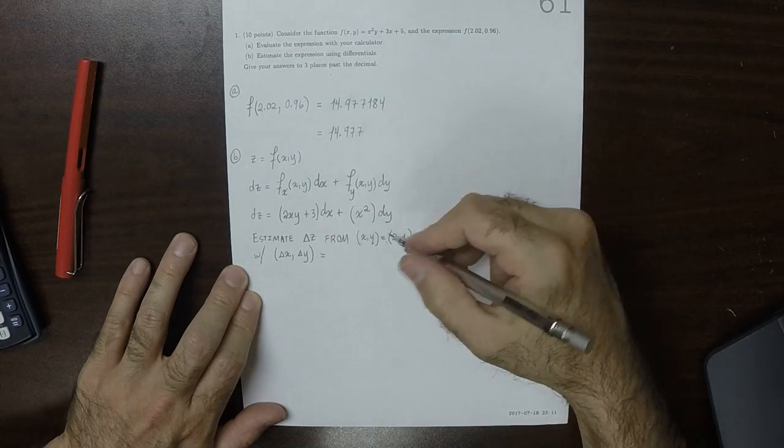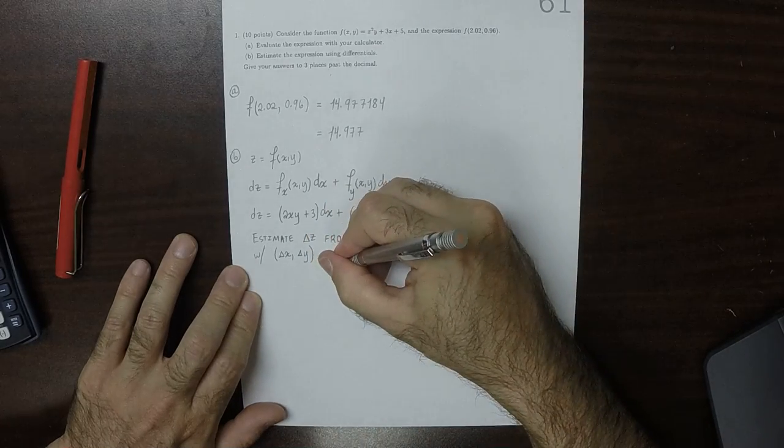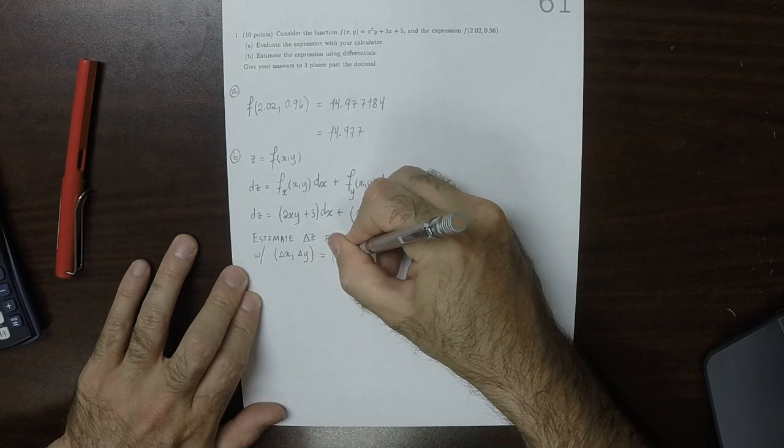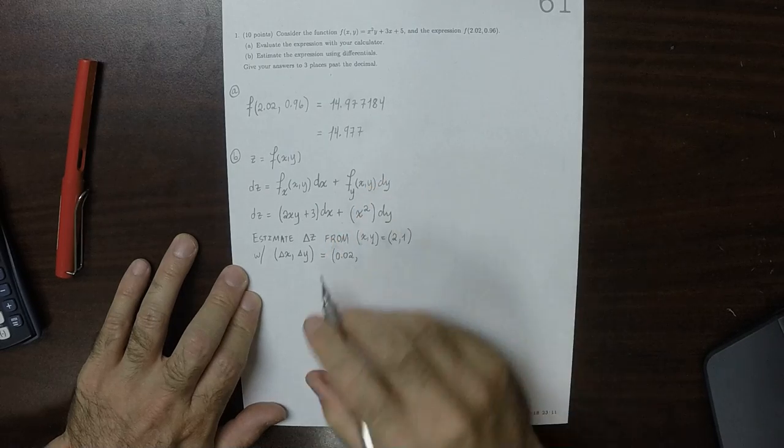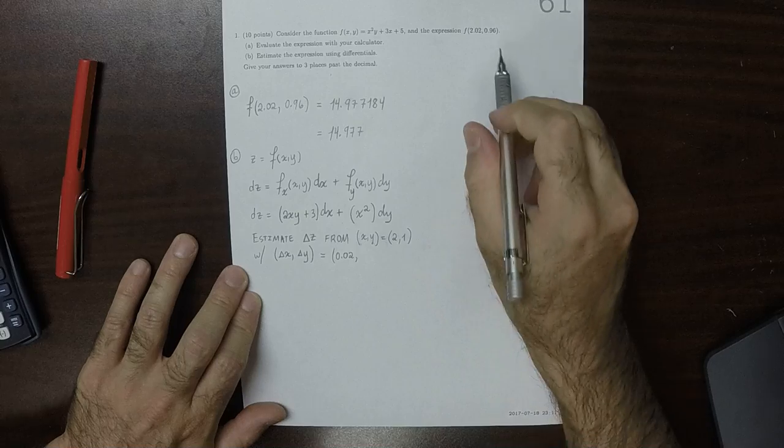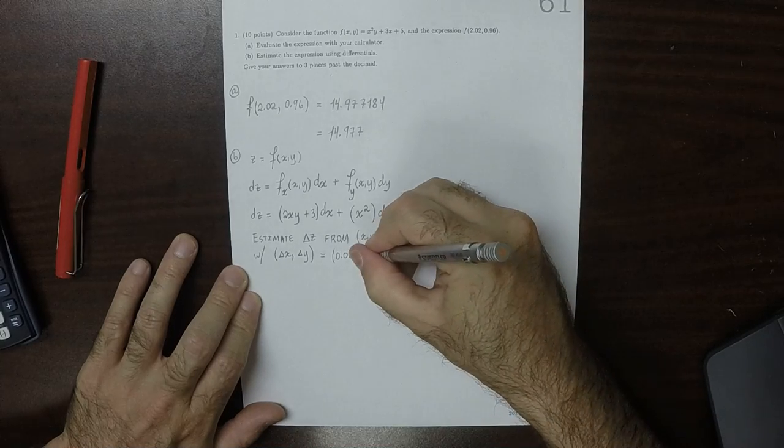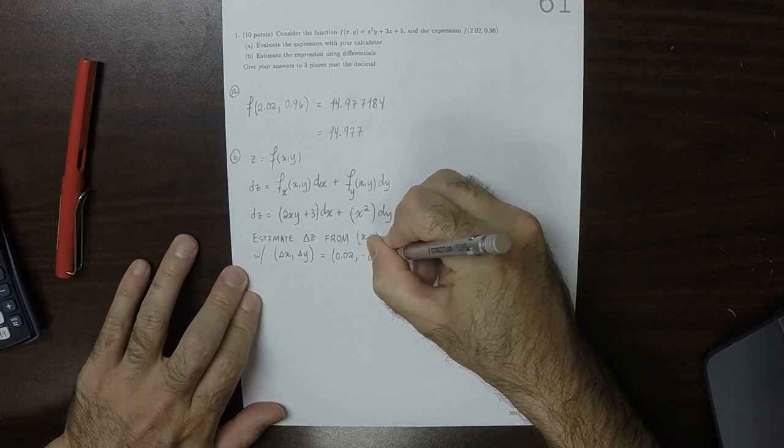Since it's 2, we're starting at 2, and we want to get to 2.02. That means that delta x is 0.02. And since we're starting at 1, and want to get to 0.96, that means that delta y is negative 0.04.